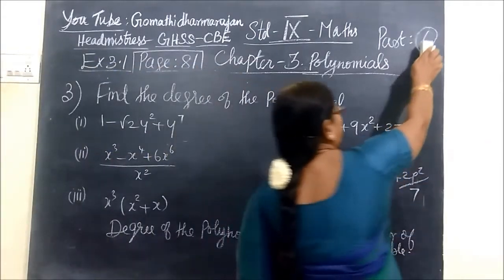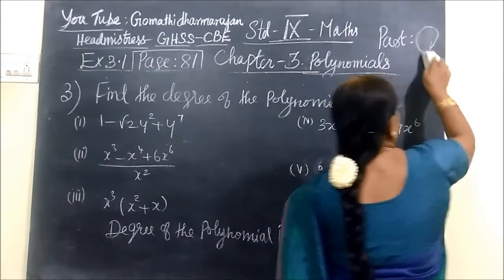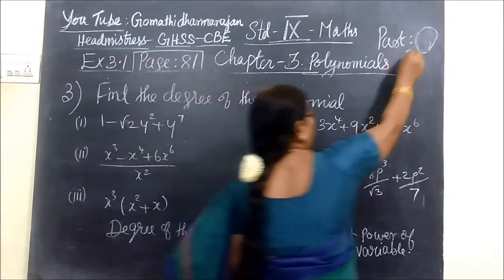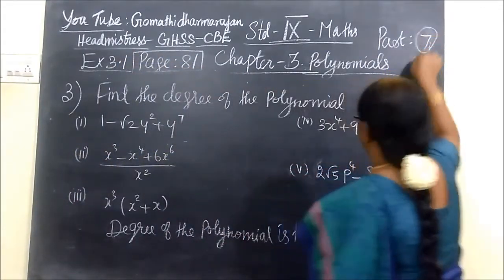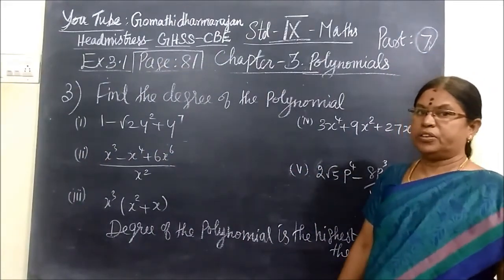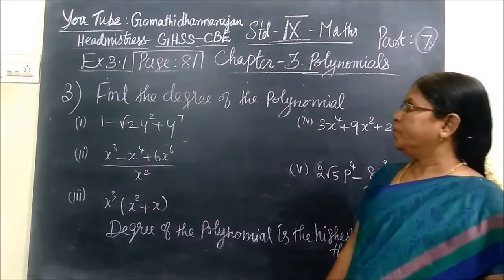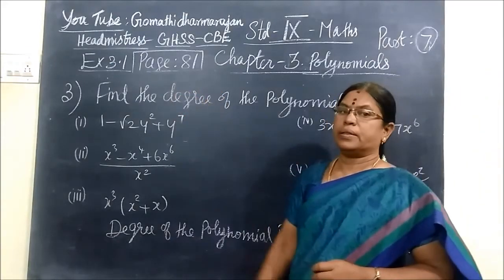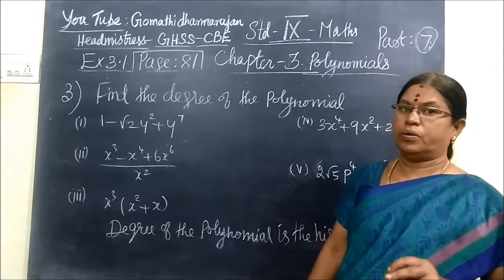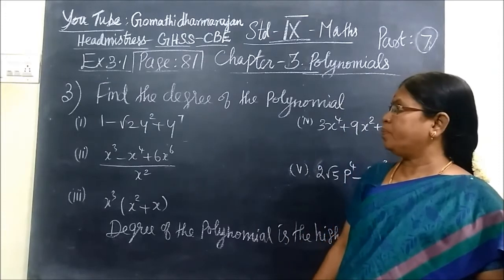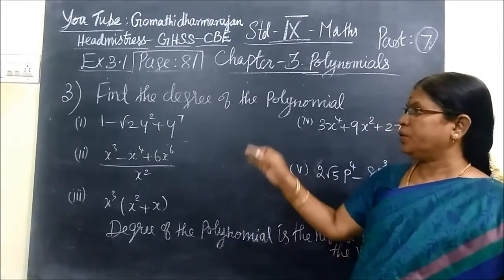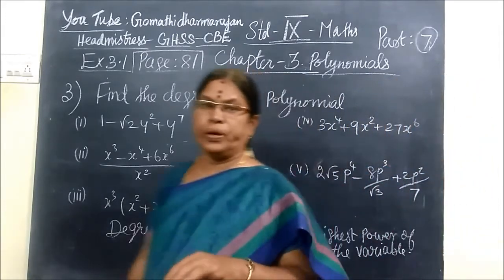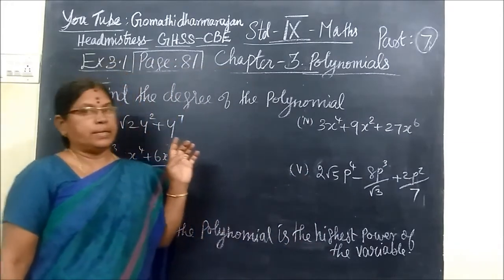Good evening students. Now we see Part 7, and this is for 9th standard maths, English medium. Page number 81, Exercise 3.1. In Exercise 3.1 we do the third sum. 1 and 2 we have done in Part 6.